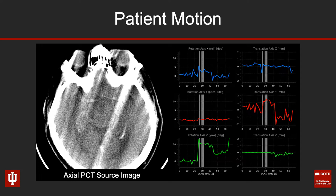This is what it looks like on the source perfusion CT imaging — you can see all that streak artifact and blur caused by patient motion. On the right you can see graphs representing the actual X, Y, and Z axis rotation and displacement to quantify the degree of motion artifact.